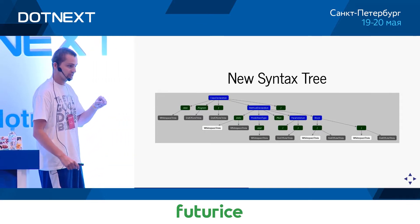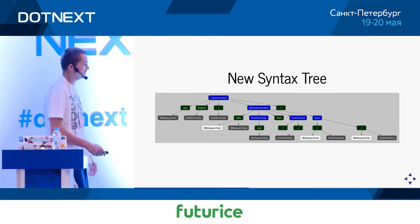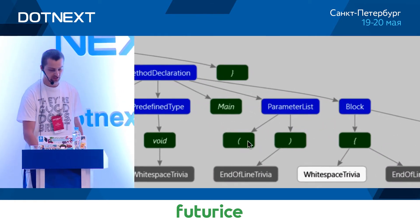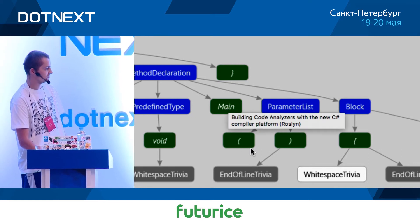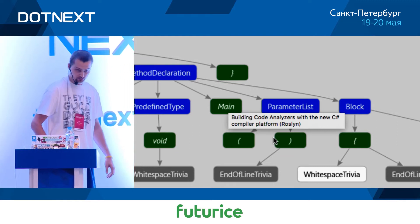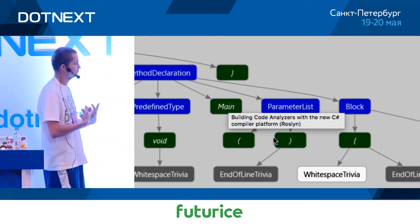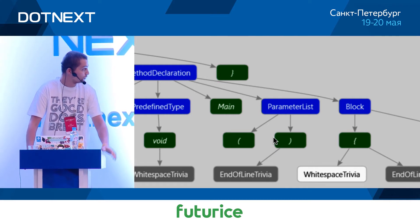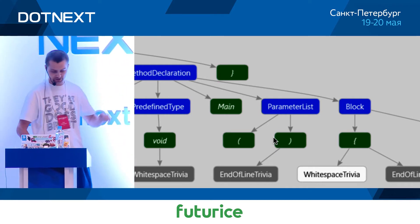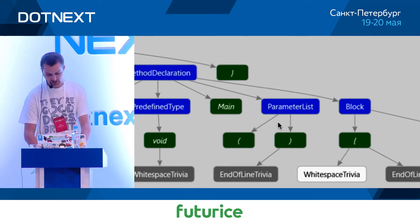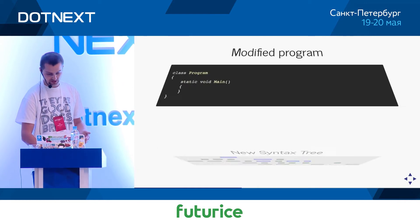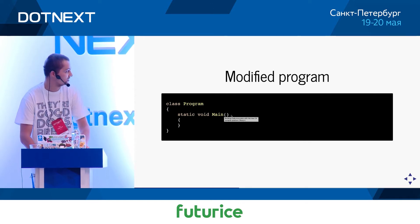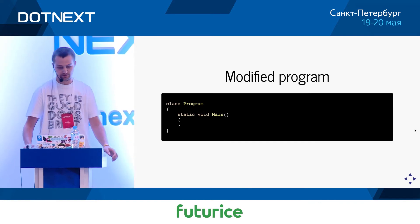For example, we have a parameter list that is empty — our main method has an empty list of parameters. If we want to take the analysis further and add a parameter like a string array of arguments, we could target that specific syntax node and only that node, add a child node representing a parameter. The net result is that we would really be modifying only what is in between those braces — everything else remains untouched, which is quite useful.